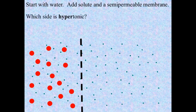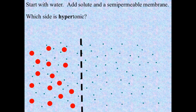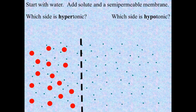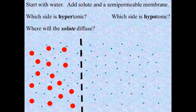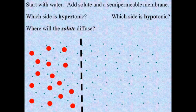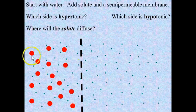The first thing to ask yourself is which side is hypertonic — hyper meaning a higher concentration of solute — and it's pretty obvious that would be the left side. So if the left side is hypertonic, then the side that must be hypotonic is the right side. Now, where will the solute diffuse? The answer is that it can't go anywhere because there's a semi-permeable membrane in the way. Without the membrane, the solute would diffuse from the high concentration on the left side to the right, but it can't.